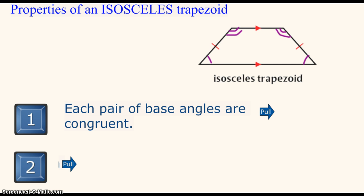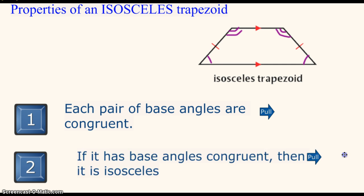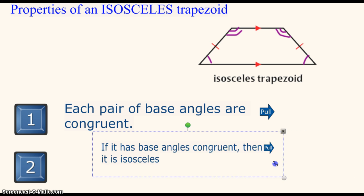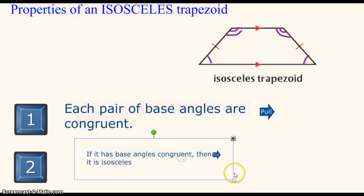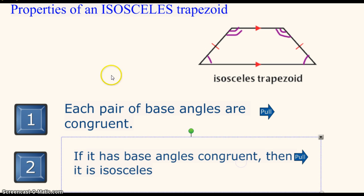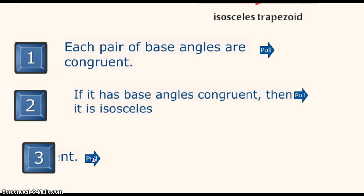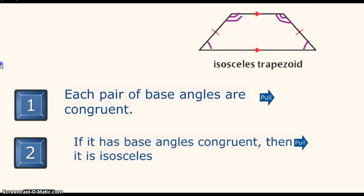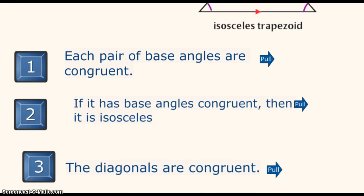The second thing is basically repeating the exact same thing, that if you see a triangle and it has base angles congruent, then you know it's isosceles. So if it's isosceles, you know these base angles are congruent, or if I tell you the base angles are congruent, then you have to know it's isosceles.